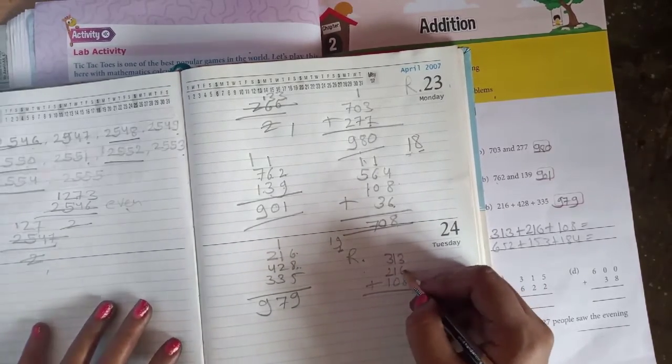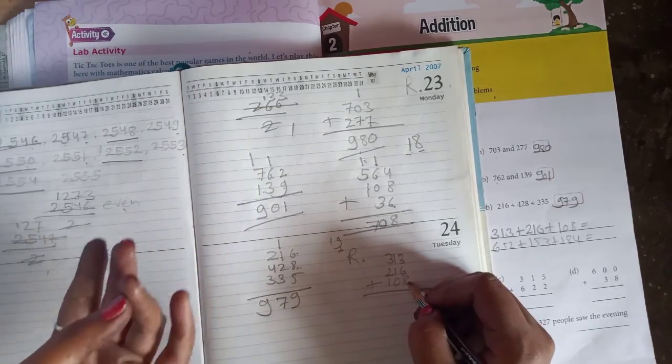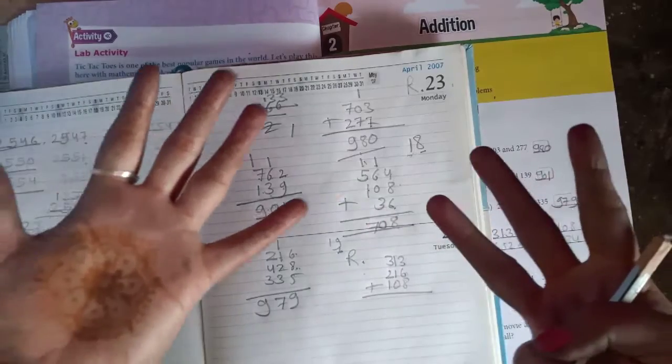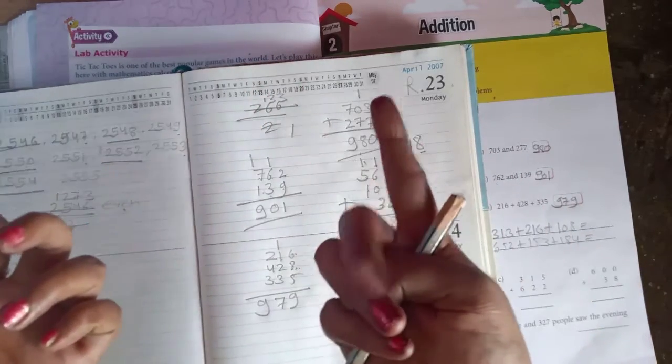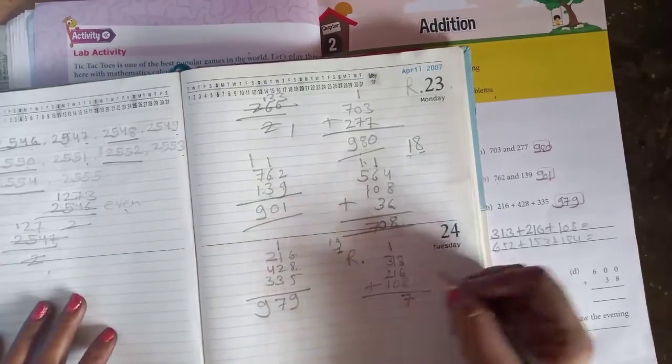6 plus 3: 6, 7, 8, 9, 9 plus 8: 9, 10, 11, 12, 13, 14, 15, 16, 17. So 7 is always here and 1 is here.